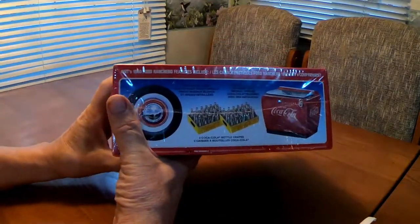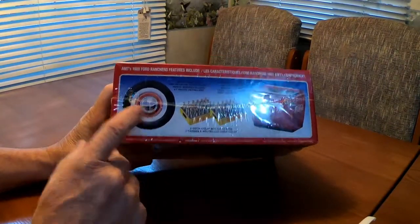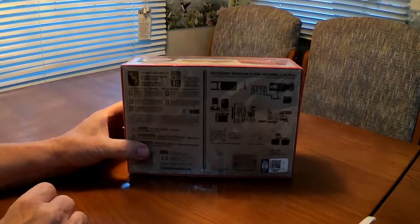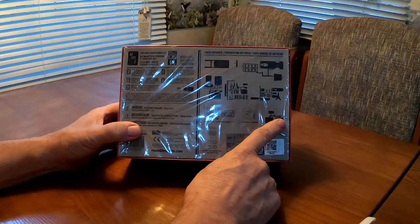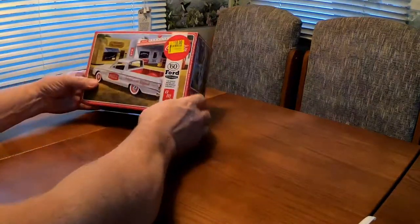Pretty spiffy. Comes with a cooler and two cases, stock wheels and tires. And of course you can see the parts trees on the box. Let's set that over here for now.